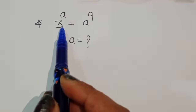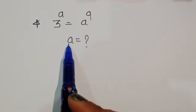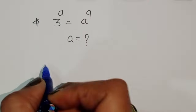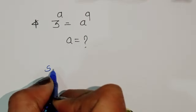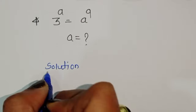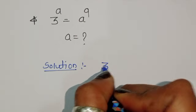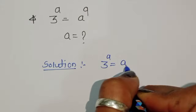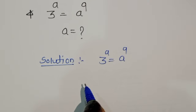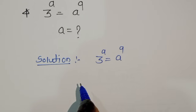The question is: given 3 power a is equal to a power 9, we have to find out the value of a. Let's see the solution. 3 power a is equal to a power 9 — this is the question. We can do one thing here: we can take power 1 upon a, because we have to cancel this power.